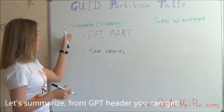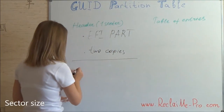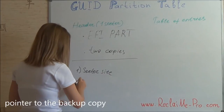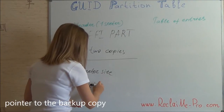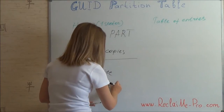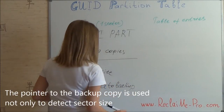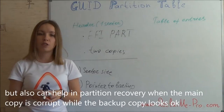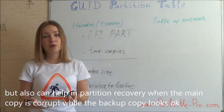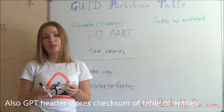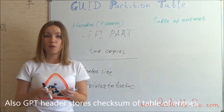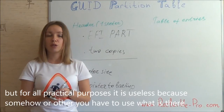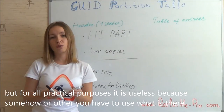From the GPT header you can get the sector size and the pointer to the backup copy. The pointer to the backup copy is used not only to detect sector size but also can help in partition recovery when the main copy is corrupt while the backup copy looks okay. The GPT header also stores a checksum of the table of entries, but for all practical purposes it is useless because somehow or other you have to use what is there.